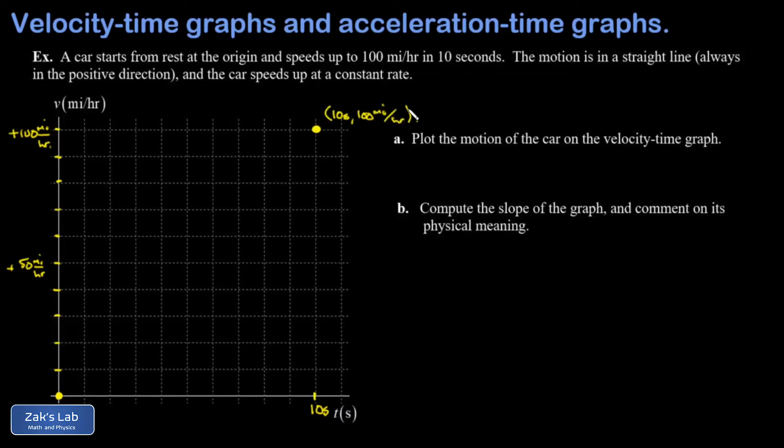Finally, we're told that the car speeds up at a constant rate, and this means we can connect those two points with a straight line. The car is speeding up uniformly.